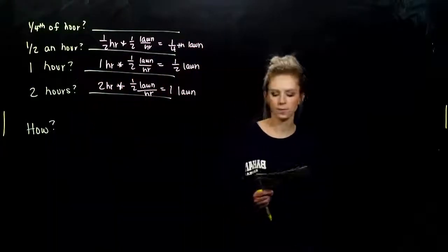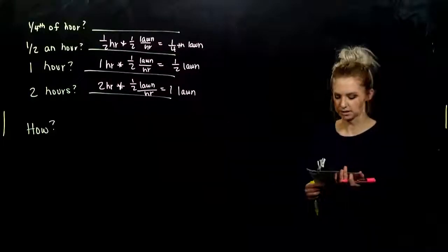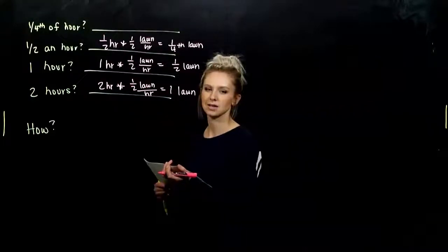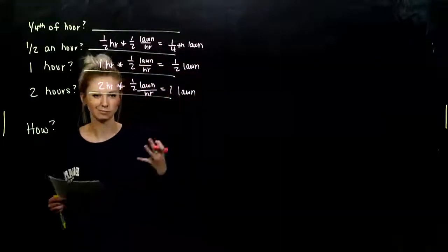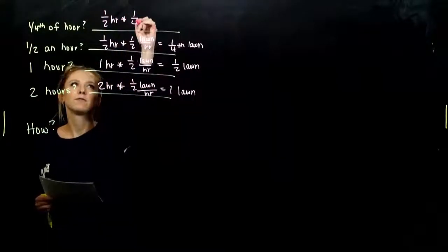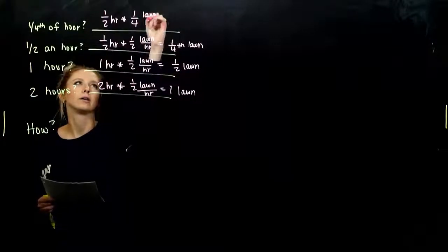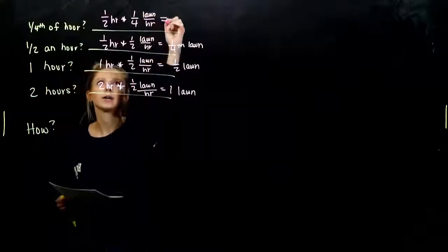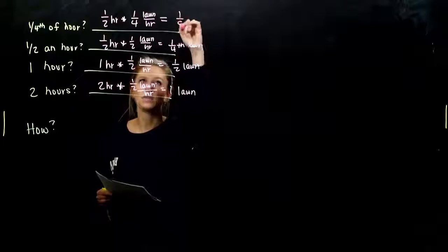And if I'm only working for a fourth of an hour, 15 minutes, how much of my lawn is going to be mowed then? Only an eighth of that lawn. It's one half of an hour times one fourth of an hour—lawn per hour gives me one-eighth of the lawn.